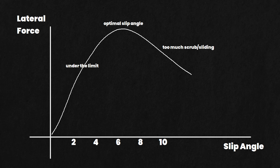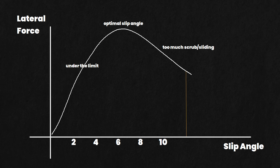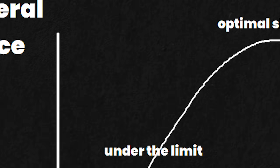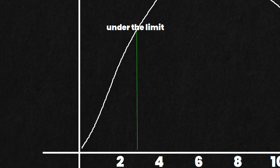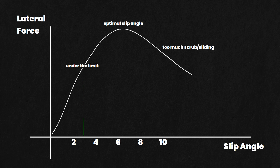How much slip angle is too much? Let's explore what happens at different levels of slip angle — from under the limit, to optimal, to slightly past optimal, and finally to excessive slip angle. This is a graph of slip angle versus lateral load. Here you can see that the forces extracted from the tire rise as we increase the slip angle, as we start bending and distorting the tires at their contact patch. At this first point, we are under the limit of the tires because they were designed to deform more than this and generate more lateral forces. So we're just not using all the grip.